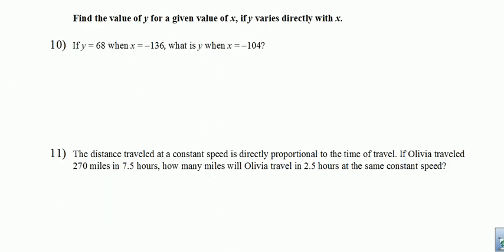Okay, a couple more questions that deal with varying directly. Question number 10 says if y is 68 and x is negative 136, what is y when x is negative 104? Well, since we vary directly, we know that y divided by x should equal y divided by x every time. So we'll take a y, 68, and divide by the x that goes with it, negative 136. And say that's the same as this unknown y divided by the x that goes with it, negative 104.